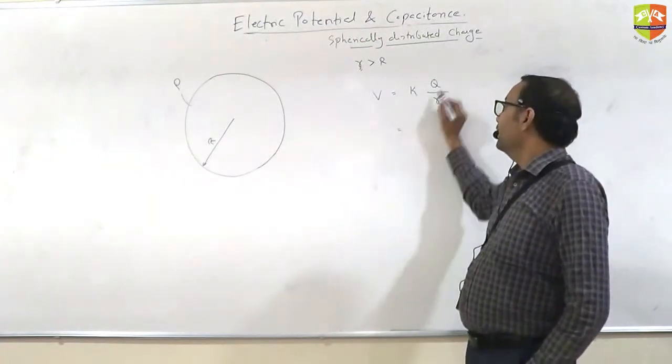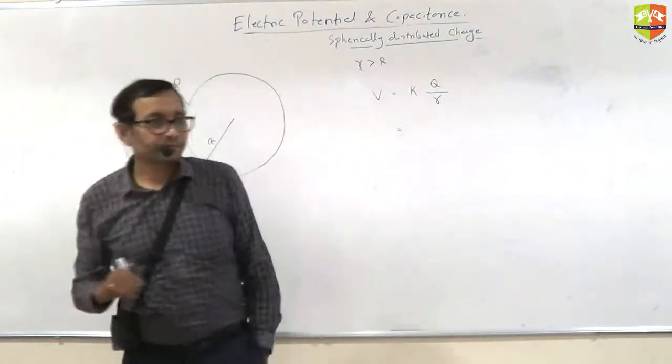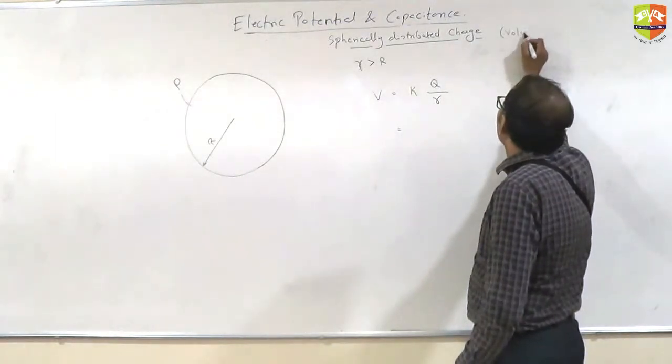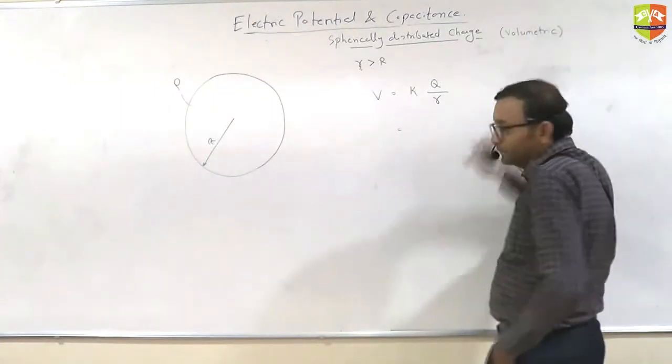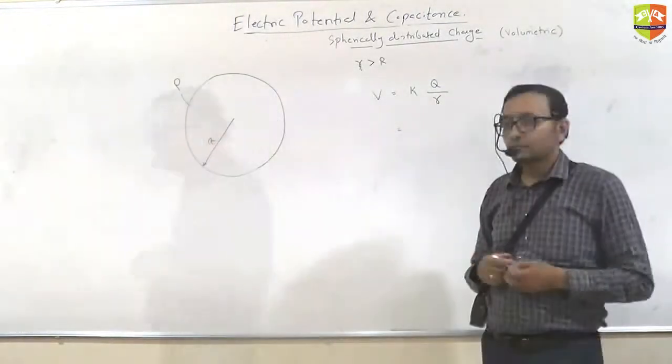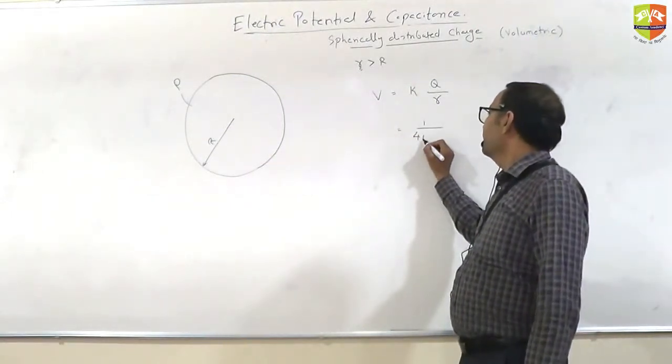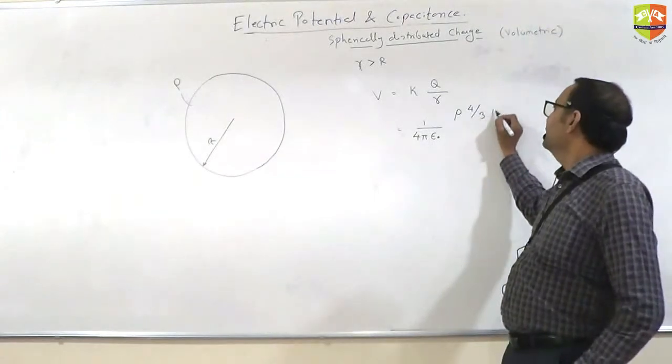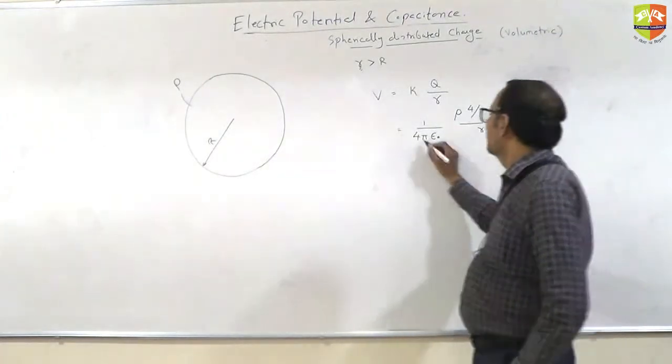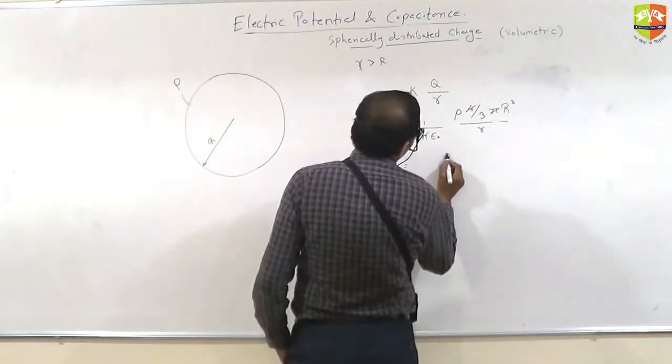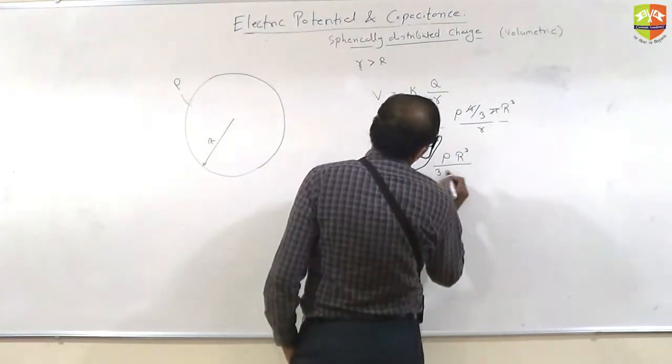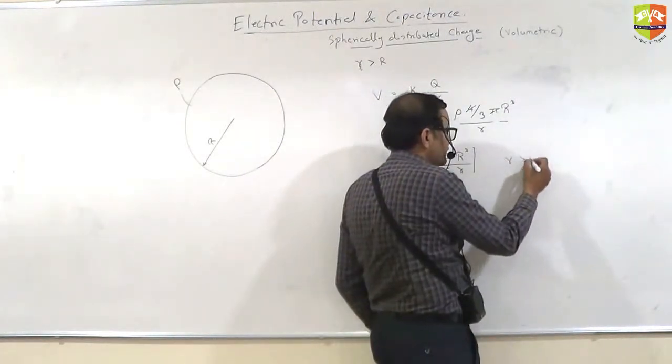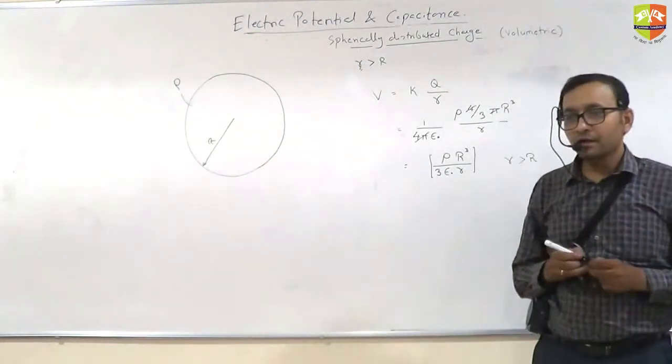Can we expand this? Write value of k, value of q in terms of rho. K is 1 by 4 pi epsilon 0. What is q in terms of rho? 1 by 4 pi epsilon 0 into rho into 4 by 3 pi capital R cubed, divided by small r. So this is straightforward if point is outside. This will be rho R cubed divided by 3 epsilon 0 r. This is the potential at a point r which is greater than capital R.